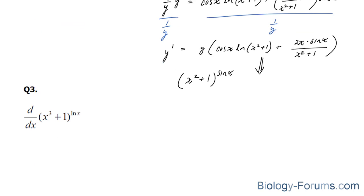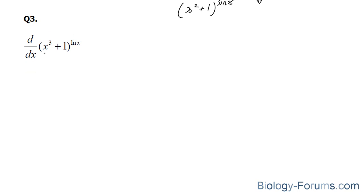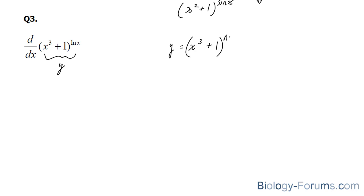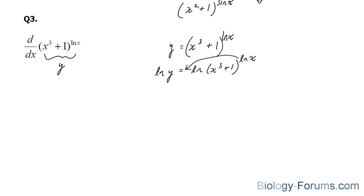Let's proceed on to question number 3. Once again, we'll set this equal to y. We have y is equal to (x to the power of 3 plus 1) all to the power of ln x. Start off by taking ln of both sides. This ln x will then come here, where we end up with ln y is equal to ln x times ln(x cubed plus 1). Don't forget that this is a product. So we will differentiate implicitly, ending up with 1 over y times y prime.